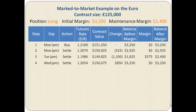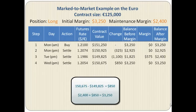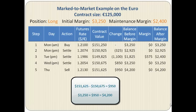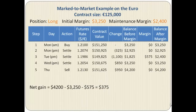In step 4, on Wednesday, the futures close at 1.2054. There is a positive change this time of $850, which is added to the buyer's margin account and the balance goes up to $3,250. On Thursday the buyer decides to sell the contract at a price of 1.2130, so the value of the contract is $151,625. $950 is added and that brings the balance of the buyer to $4,200. The net gain to the buyer is $4,200 minus the initial margin minus the margin call, which is a net gain of $375.